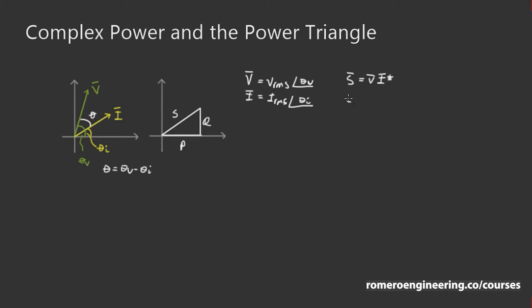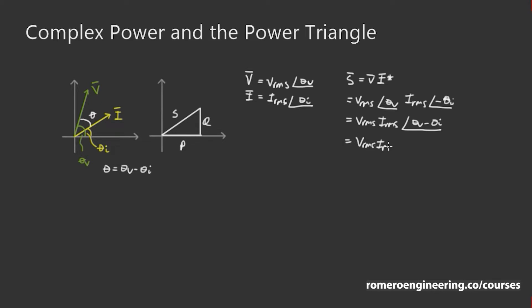If we plug in the equations for the voltage and current phasors, we get that S phasor equals V_RMS at angle theta_v times I_RMS at angle minus theta_i. Combining those, that's equal to V_RMS times I_RMS at an angle of theta_v minus theta_i, which is just theta. So S phasor equals V_RMS times I_RMS at angle theta — this is the apparent power expressed in polar form.